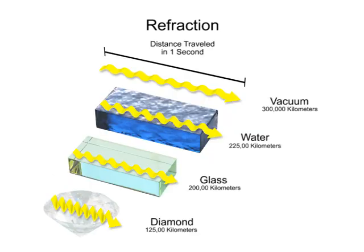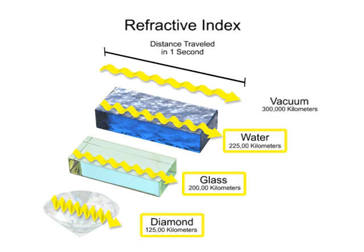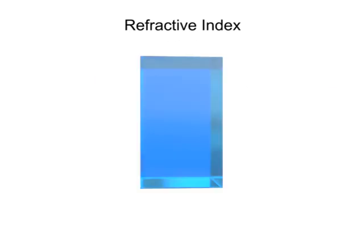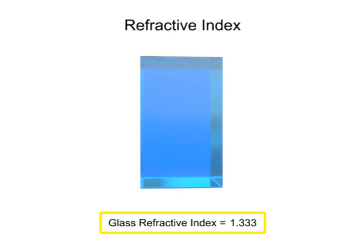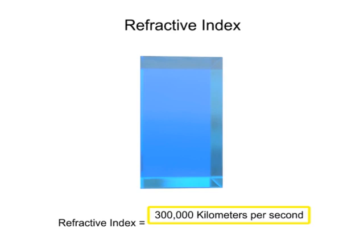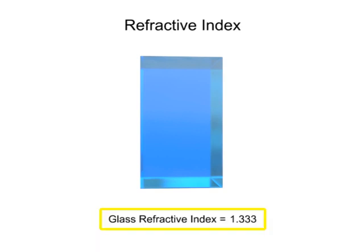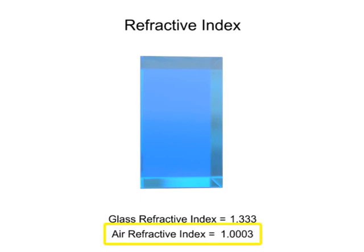Transparent materials have what is called a refractive index. This is the speed at which light travels in a medium compared to light traveling in a vacuum. For example, typical glass has a refractive index of 1.33. This is calculated by dividing the speed of light in a vacuum, 300,000 kilometers per second, by the speed of light in glass, 225,000 kilometers per second. The refractive index of air is 1.0003.